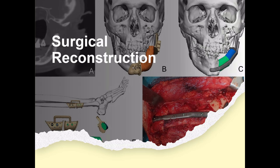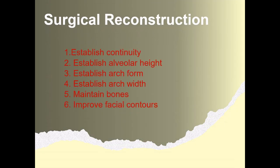The criteria for successful mandibular reconstruction are to establish the continuity of the mandible, adequate alveolar height, arch form, and arch width, which will help for easier prosthetic rehabilitation. The surgeon should also maintain as much bone as possible, place grafted bone as close as possible to the original native mandible, and maintain aesthetics by improving the facial contours.